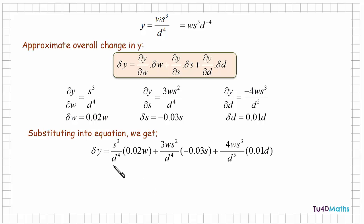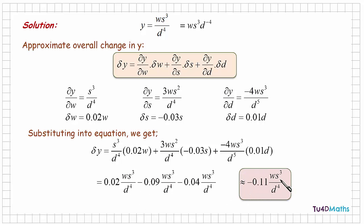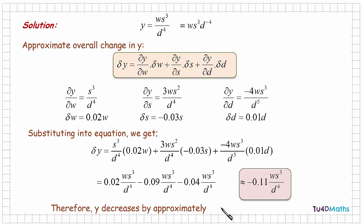And if we multiply this out, each term becomes w s to the power of 3 over d to the power of 4. So if we add these up, we get minus 0.11 times w s to the power of 3 over d to the power of 4. But w times s to the power of 3 over d to the power of 4 is in fact y. So in other words, the overall change in y is going to be a decrease of 11%.